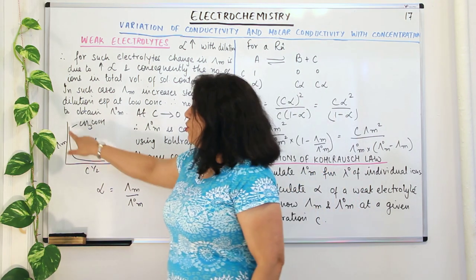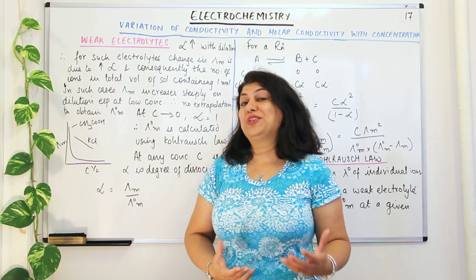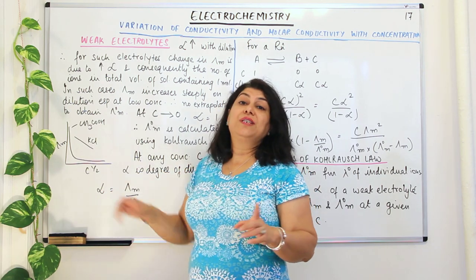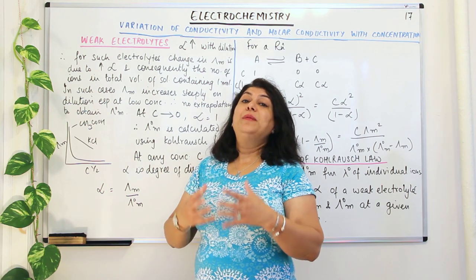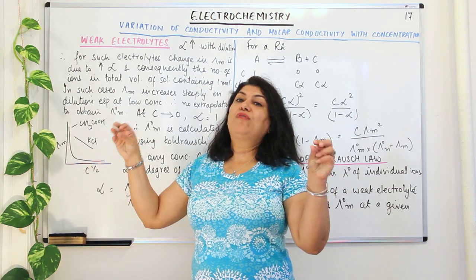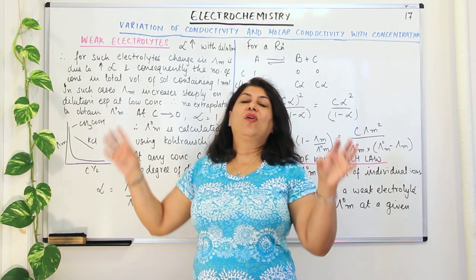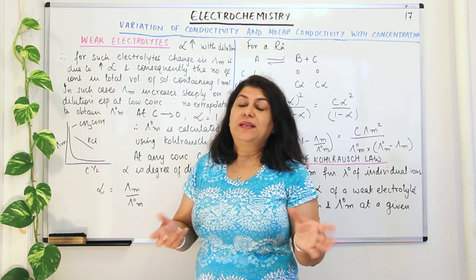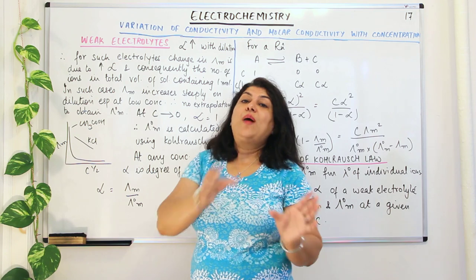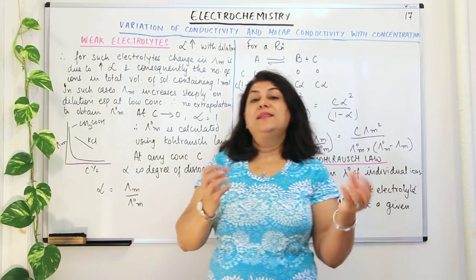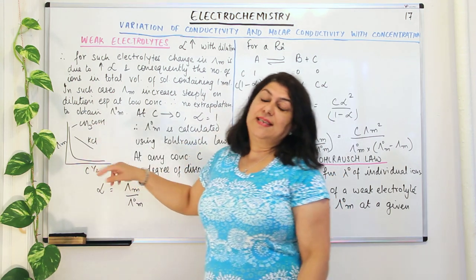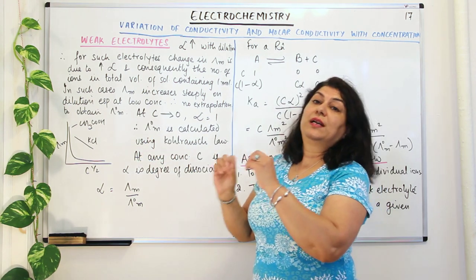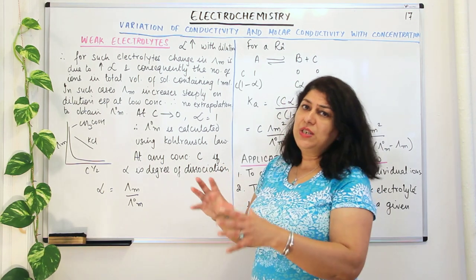If you cannot obtain lambda°M from the graph, the other way is to use Kohlrausch's law — the law of independent migration of ions — which says that the molar conductivity of individual ions is a characteristic of the ions themselves. Therefore, when you have a salt dissolved, you can calculate the molar conductivity theoretically by referring to the values of the limiting molar conductivities of the individual ions and summing them up. For weak electrolytes, it is necessary to find the individual ionic molar conductivities from a table and calculate lambda°M from there.